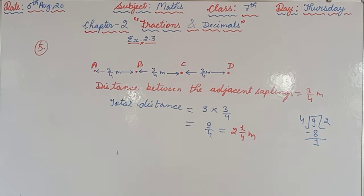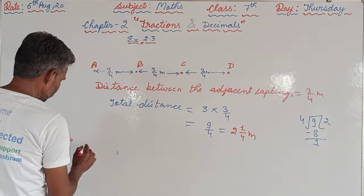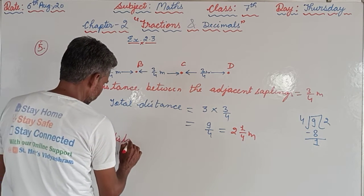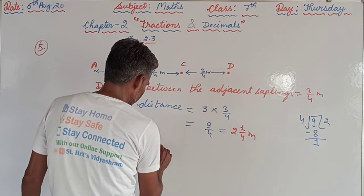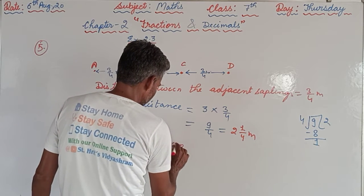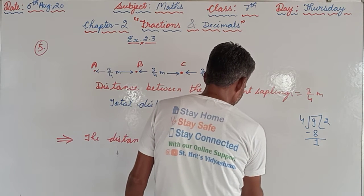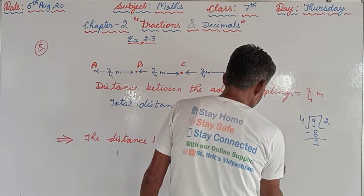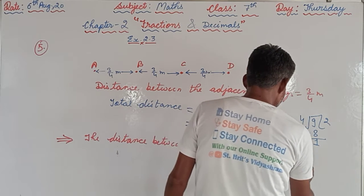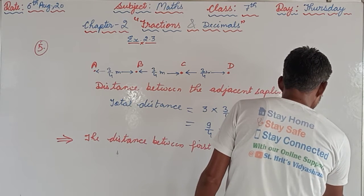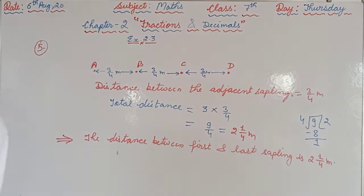As this is a word problem, we are supposed to supply the answer in complete language. The question asked us to find the distance between the first and the last saplings. So we write: the distance between the first and last saplings is two and one-fourth meters.